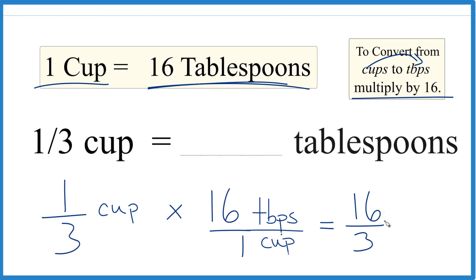You could write it as a mixed number though. Three goes into 16, let's see, five times three is 15 with one left over. And then we bring the three across. So that's the same as five and one third.